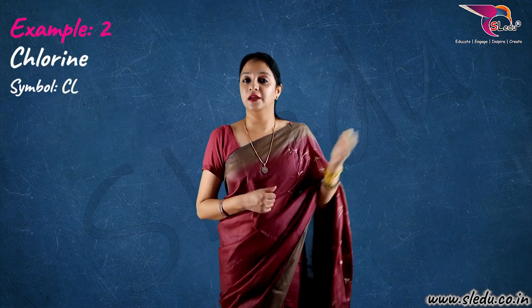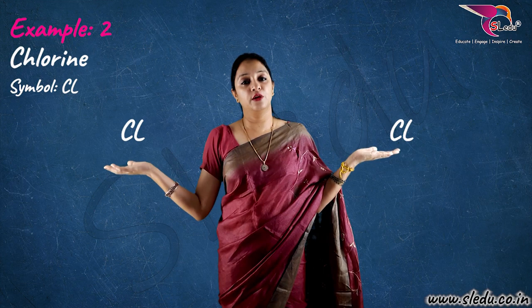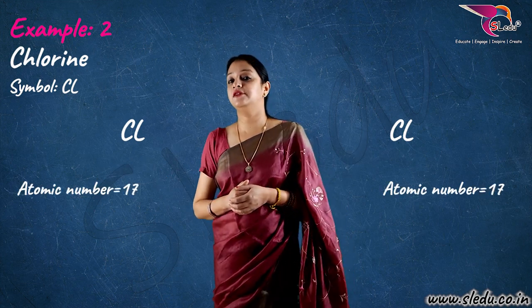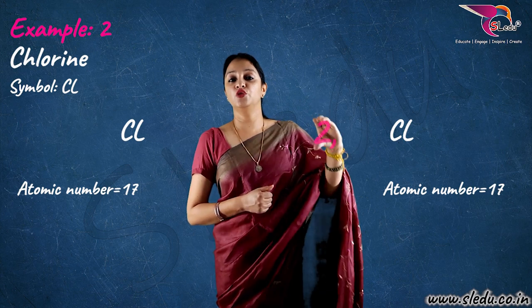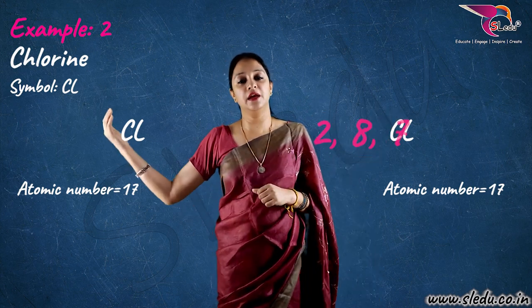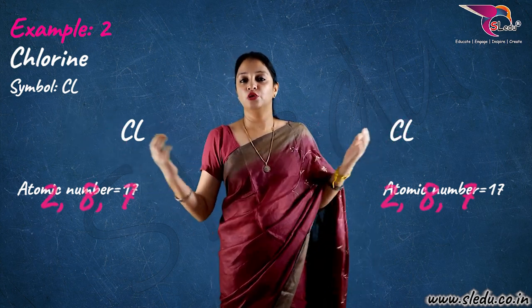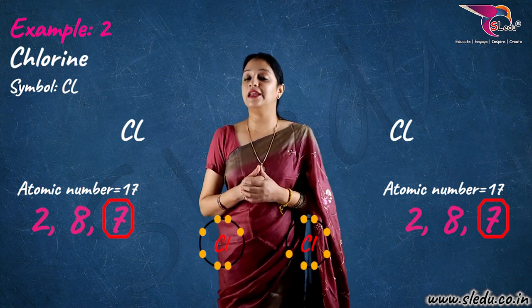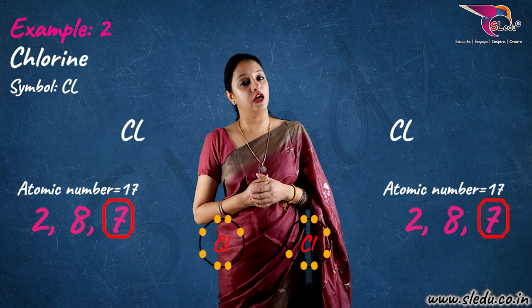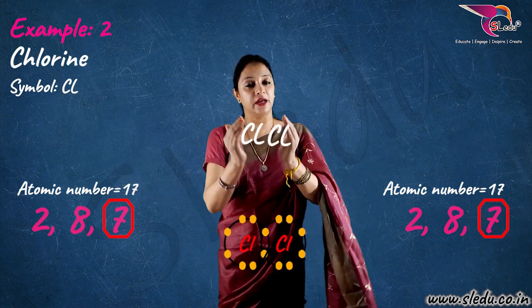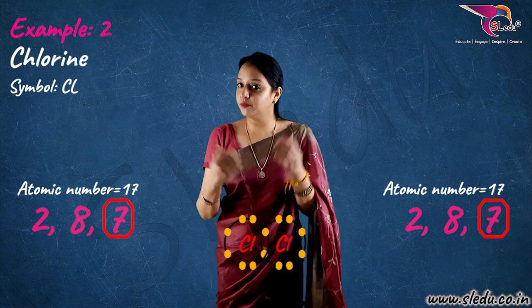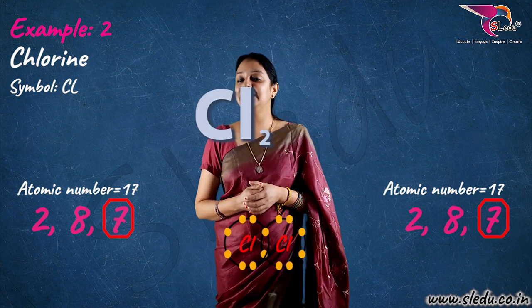Similarly, I can take the example of chlorine. Chlorine, Cl, and chlorine, Cl. Chlorine's atomic number is 17, so its electronic configuration is 2, 8, 7. Similarly the other chlorine also has 2, 8, 7. Both have 7 electrons in their last shell. Both need one more electron to complete their last shell. So, both chlorine will again collaborate, they will share one electron each, to form the final product Cl2.